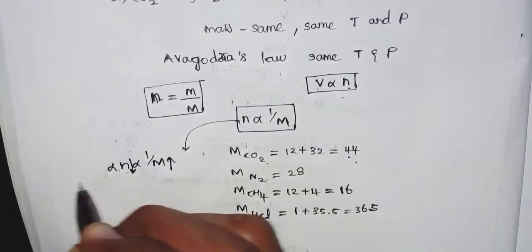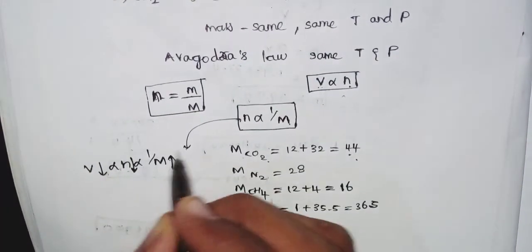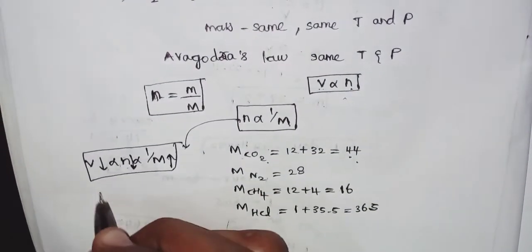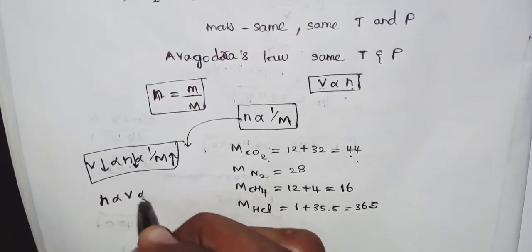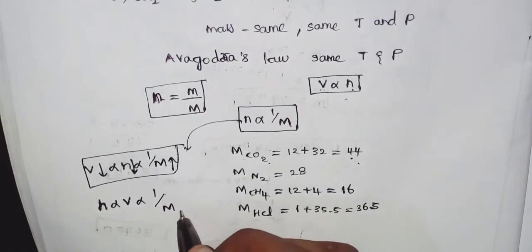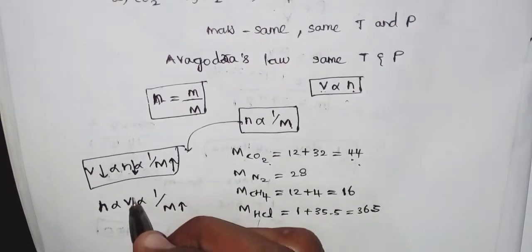If the number of moles is less, volume is less. Simple concept: the number of moles is directly proportional to volume and inversely proportional to molar mass. If molar mass increases, volume is less.